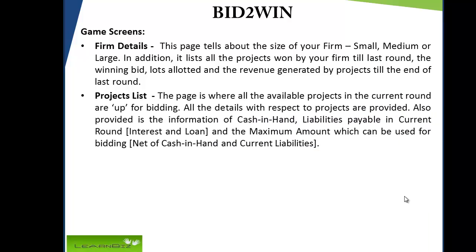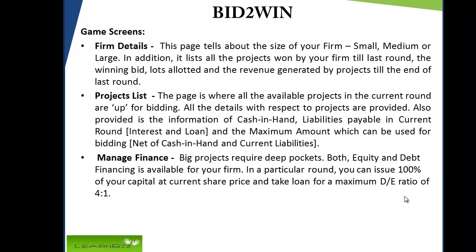Projects list: this page is where all the available projects in the current round are up for bidding. All details with respect to projects are provided. Also provided is the information of cash in hand, liabilities payable in the current round, and the maximum amount which can be used for bidding, net of cash in hand and current liabilities. Manage finance: big projects require deep pockets. Both equity and debt financing are available. In a particular round, you can issue 100% of your capital at current share price and take a loan for a maximum debt equity ratio of 4 to 1.